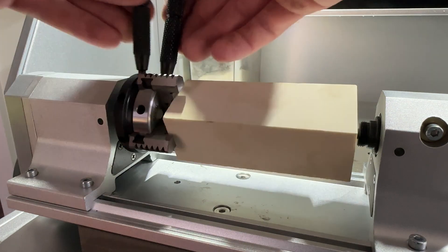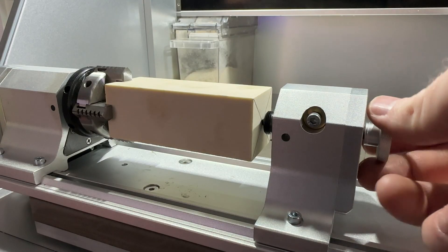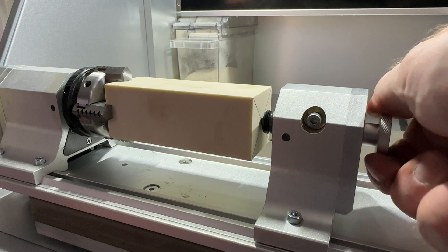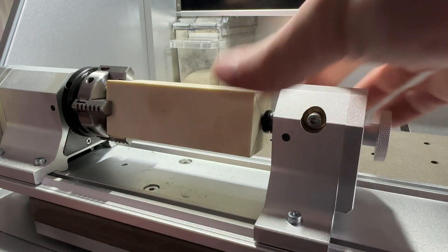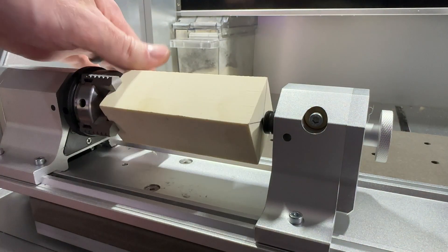Next, tighten the chuck jaws so the stock is held securely within the center of the chuck. Finally, rotate the knob of the tail stock to press it and secure it into our piece of material, then tighten the set screw at the top of the tail stock.